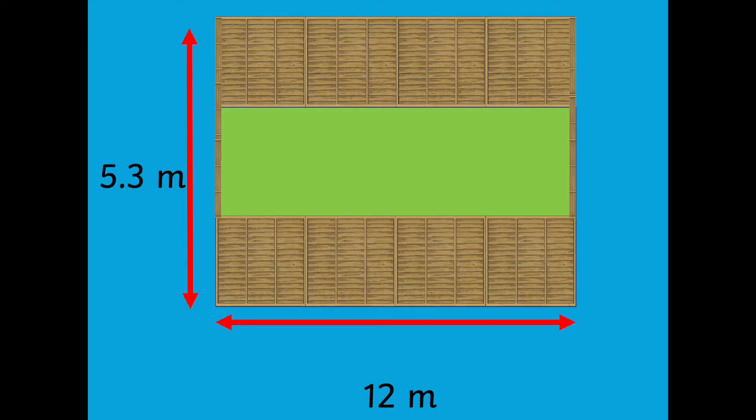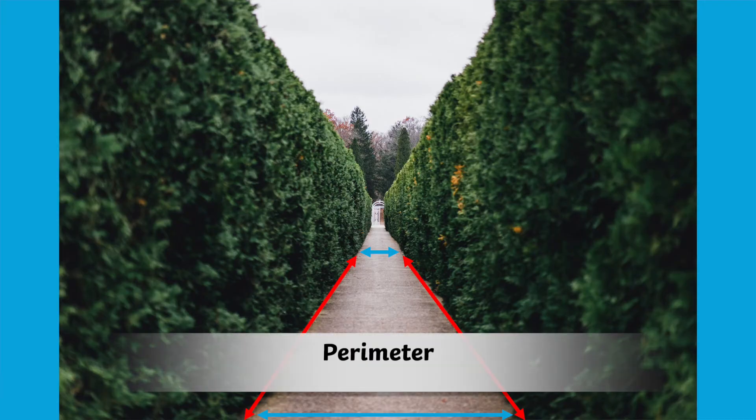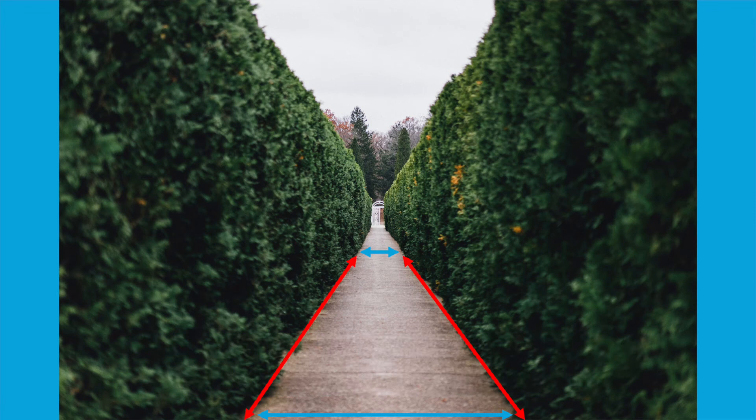Putting up a fence or planting a hedge may explain why perimeter is required, but giving authentic, purposeful context for learning early on makes it more meaningful.